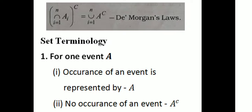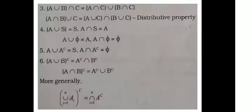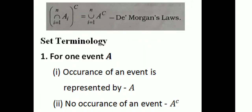De Morgan's Law is an important result. That is, the complement of A union B equals A complement intersection B complement. The complement of A intersection B equals A complement union B complement. For set terminology for one event: occurrence of event A is represented by A.